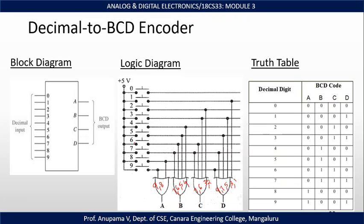Now let us see what happens if switch 5 is turned ON. When switch 5 is ON, line 5 is set to 1 and all other lines are set to 0. The inputs for OR gate A are 0 and 0, so its output is 0. OR gate B has inputs 0, 0, 1, 0, so its output is 1. The inputs for OR gate C are 0, 0, 0, 0, so its output is 0. Therefore, when input 5 is active, the output of the OR gates gives the BCD equivalent.